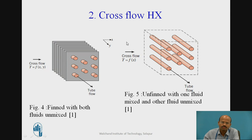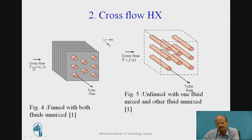In the cross flow heat exchanger, the tubes are finned. Hot fluid flows through the tubes and cold fluid is passed through the gaps between the fins. The direction of flow is at 90 degrees to each other. This type is known as finned with both fluids unmixed.